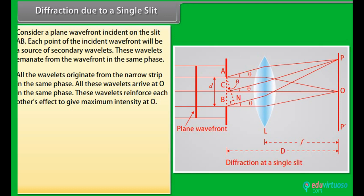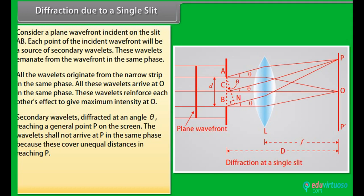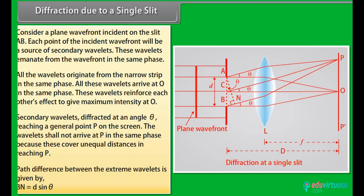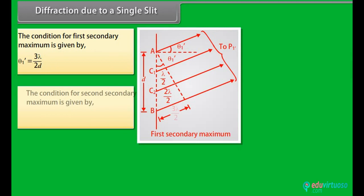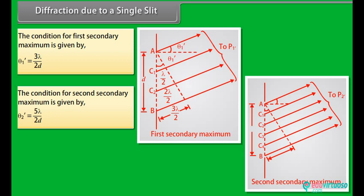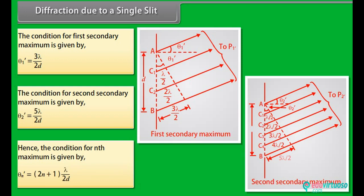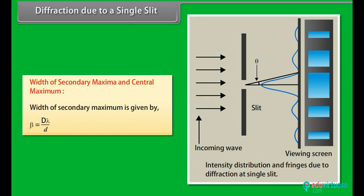Consider the formation of secondary minima and secondary maxima. Secondary wavelets diffracted at angle theta reach a general point P on the screen. The wavelets do not arrive at P in the same phase because they cover unequal distances. The path difference between the extreme wavelets is BN = D sin θ. The condition for the first secondary maximum is at angle θ = 3λ/2D, the second at θ = 5λ/2D, and the nth maximum at θ = (2n+1)λ/2D.